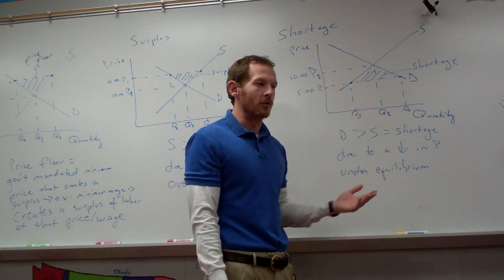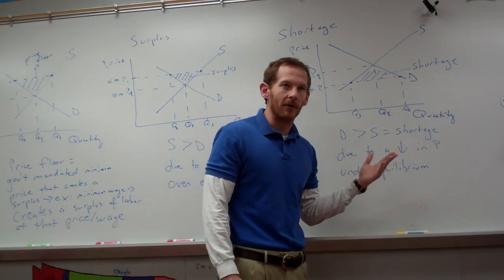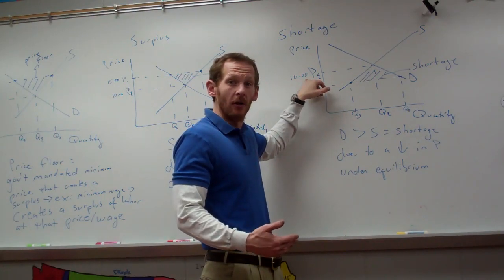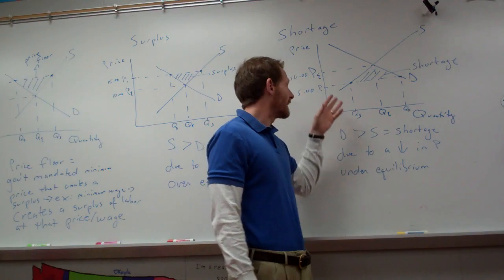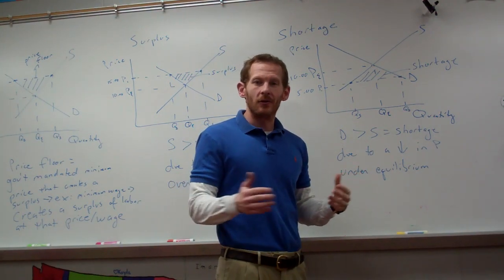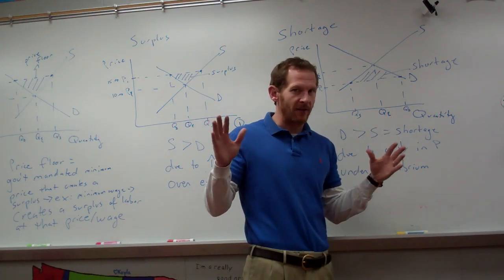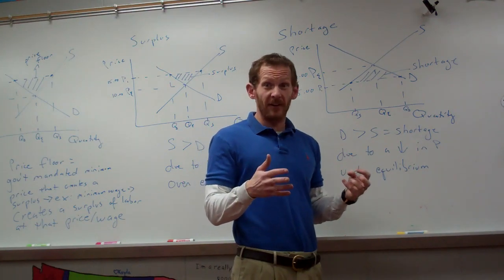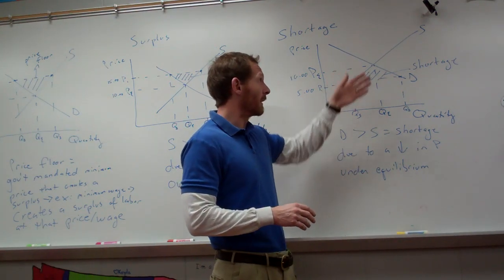Think of it this way — new Jordans come out at $150. Everyone wants them, and they drop the price to $75. Everyone's going to want more, but Nike's not going to want to sell that many because it won't make as much profit, so there's a shortage. You see this all the time at Christmas — there's always one hot toy every kid has to have, and there's a huge shortage. If they wanted to fix the shortage, they would raise the price up to equilibrium.